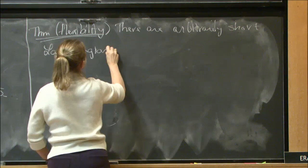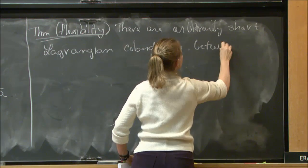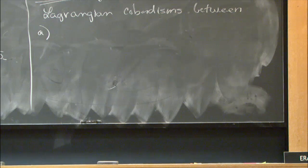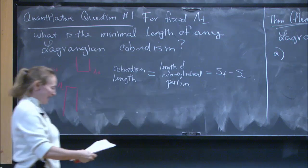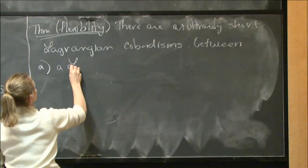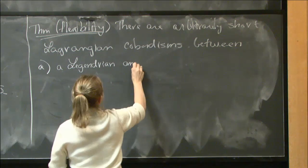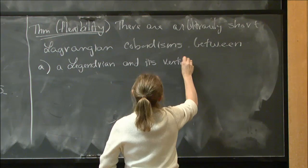Let's start with flexibility — meaning there are arbitrarily short Lagrangian cobordisms. Once you think about qualitative questions, you have to be careful — these are fixed Legendrian submanifolds, not just fixed isotopy classes. For example, you can get a short one between a Legendrian and its vertical translate — any vertical translate. In my pictures, vertical means vertical in the Z direction in the slice, not the S direction.